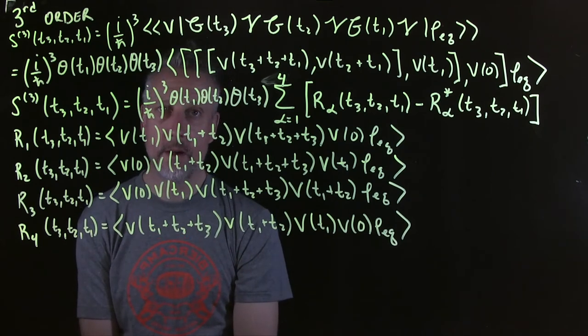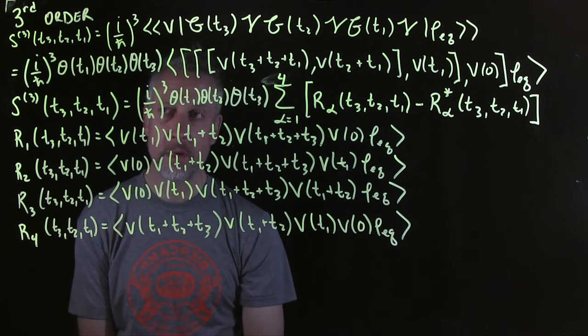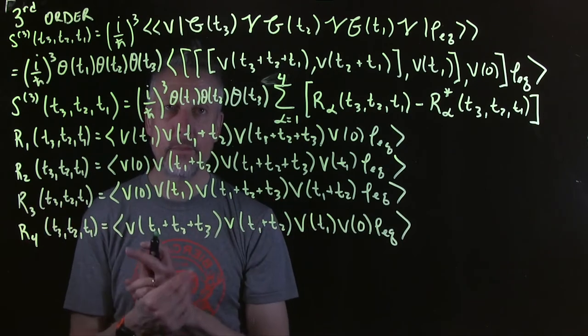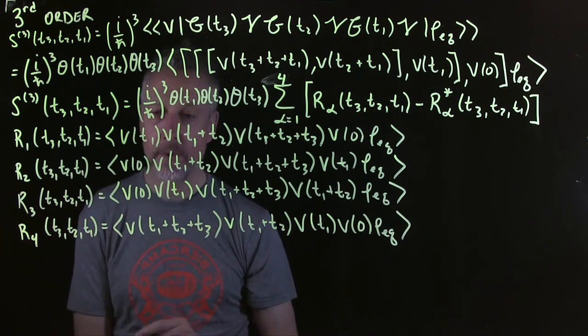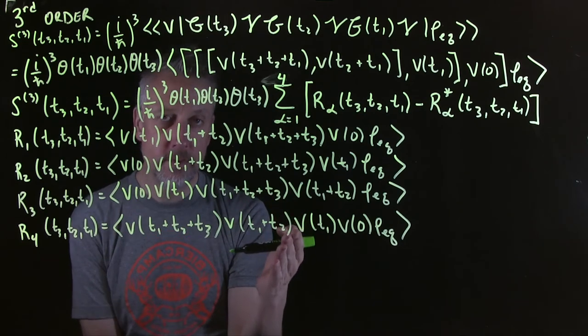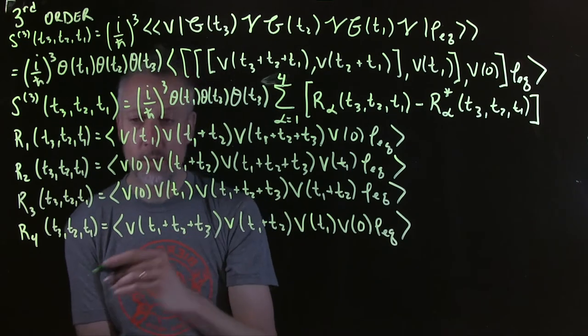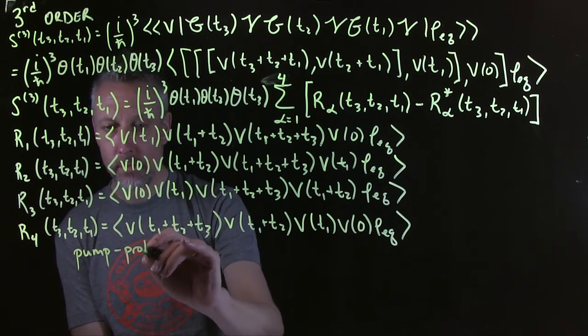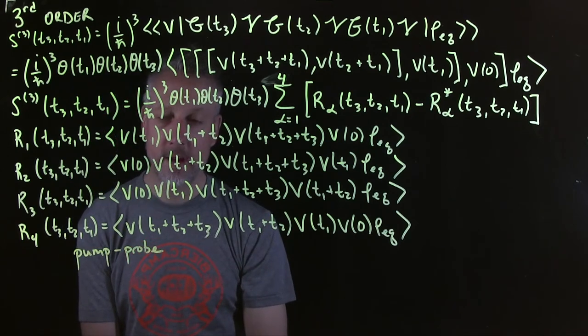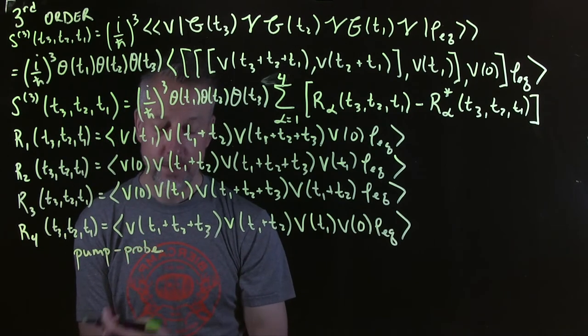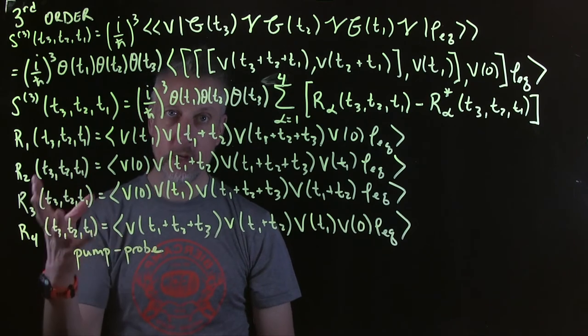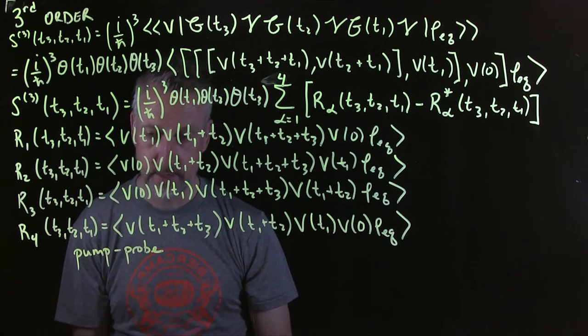Now, one point that is worthwhile to think about, is that in some of the actual experiments people do with these different response functions, there might be things that simplify. For example, as I mentioned before, this is the response function that you would use for pump probe spectroscopy. All right, so pump probe is one of the oldest kinds of ultrafast spectroscopy. There's sort of examples of this that date back of almost 100 years, where you trigger something, and then you look at it later with some kind of measurement device.